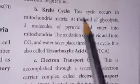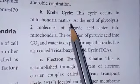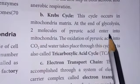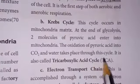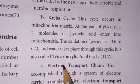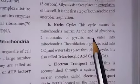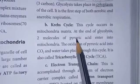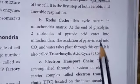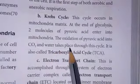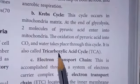The second step is the Krebs cycle. This cycle occurs in the mitochondria matrix. At the end of glycolysis, 2 molecules of pyruvic acid enter into the mitochondria. The oxidation of pyruvic acid into carbon dioxide and water takes place through this cycle. It is also called the tricarboxylic acid cycle.